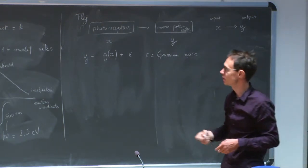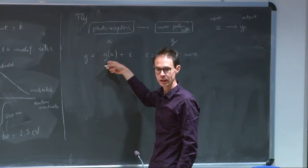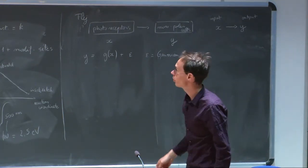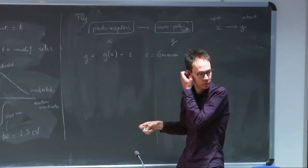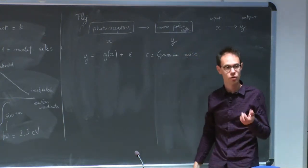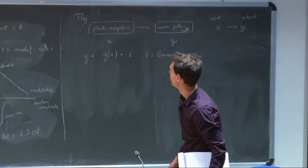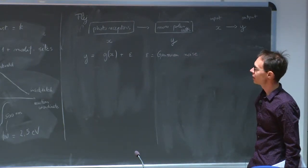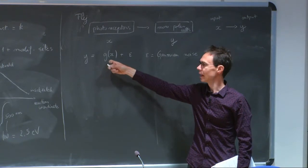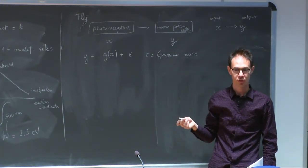Alexandra already looked at the case where Y was linearly related to X plus some noise. Here I'll do something a bit different: I'll also assume that G can be a nonlinear function. G and the magnitude of the noise will characterize the properties of my channel, and ultimately the question is whether this G of X has a particular form justified by efficiency of information transmission.